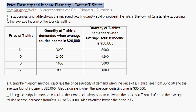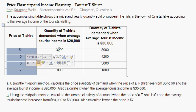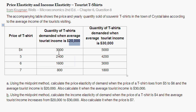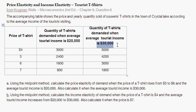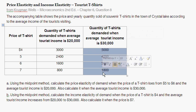The question asks: the table shows the price and yearly quantity sold of souvenir t-shirts in the town of Crystal Lake according to the average income of tourists visiting. So here you've got different prices, and given an income, these are the quantity demanded at that income, and then given this relatively higher income, you see the relatively higher quantities demanded given these prices.